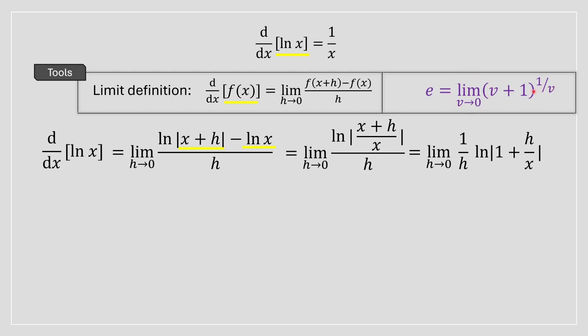To do that, we're going to have to make it resemble this limit over here. There's a lot of manipulation you're going to have to do. First things first, we're going to need a v term. So we're going to say that v is equal to h divided by x.